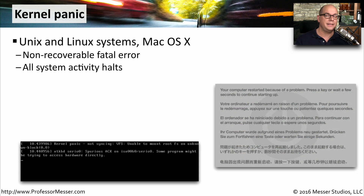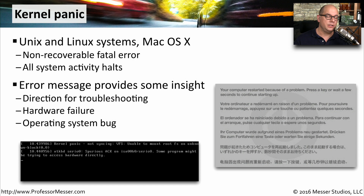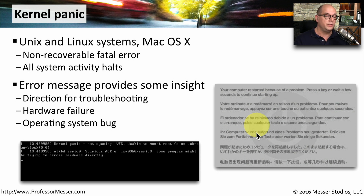A kernel panic is something you might see in Unix, Linux, or Mac OS, and it's very similar to a Windows blue screen of death. It's an unrecoverable error that causes the entire system to halt completely. You may be able to see the error message when it occurs to find out what's causing it. In Mac OS, you may need to restart and look at the logs to see where the problem occurred. This can help you determine whether the issue is related to bad hardware or a problem with the operating system.